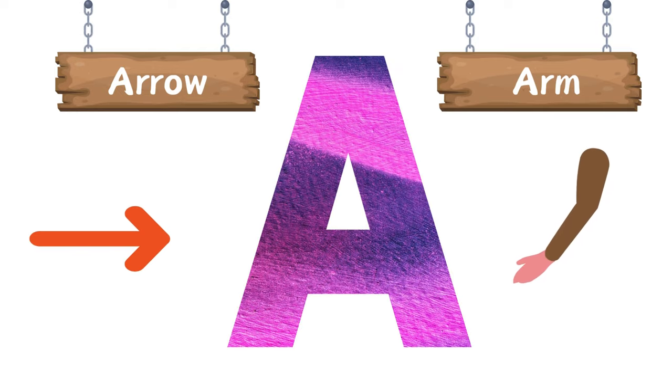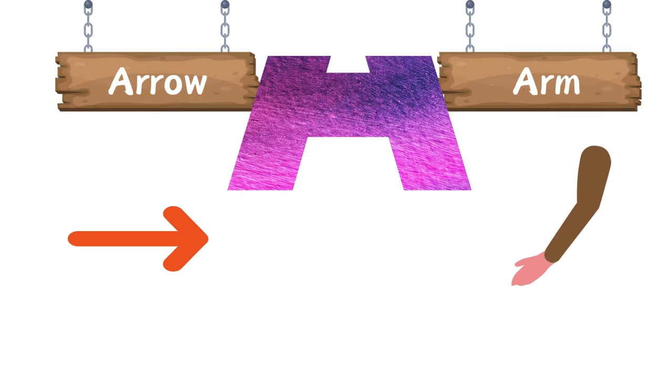A is for arrow. A is for arm. Arrow. Arm. Ah.